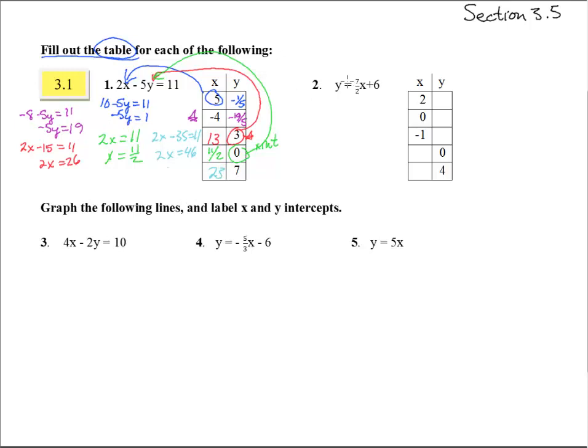Number 2, this one's in slope intercept form. We could get different points, but here we're supposed to fill out the table and get these specific ones. So first we're going to stick this in for x, and we get y equals 7/2 times 2 is 7 plus 6, that gives us y equals 13.